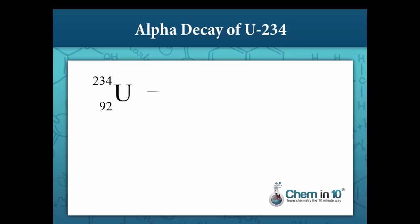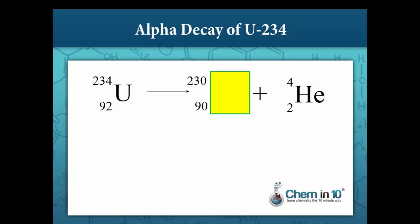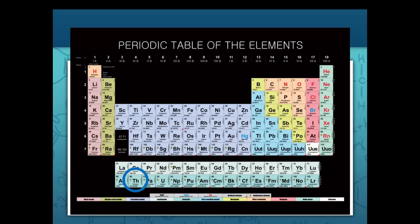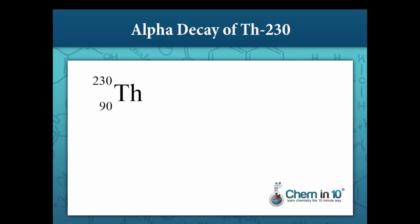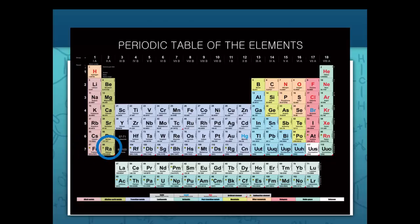Let's look at the alpha decay of uranium-234. The mass number of our unknown nuclide must be 230 because 230 plus 4 equals 234. The atomic number is 90 because 90 plus 2 equals 92. Looking at the periodic table, our unknown nuclide is thorium-230. Thorium-230 also undergoes alpha decay; the mass number of the nuclide it forms is 226 and its atomic number is 88, whose identity is radium.